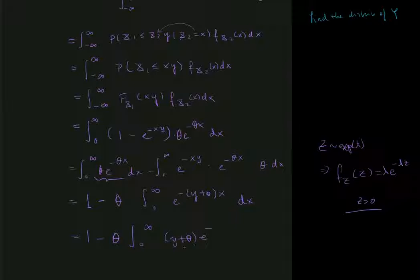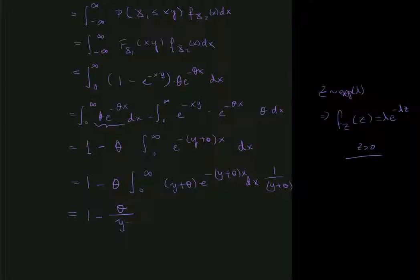So what I have here now is that I've multiplied by y plus theta such that the density looks the way it should look. And the way I compensate for that outside of the integral is that I just multiply with the inverse. So I divide by y plus theta outside of the integral. And that then is equal to, well, the integral here is just equal to 1, right? So this is now equal to 1 minus theta over y plus theta.